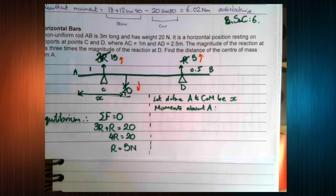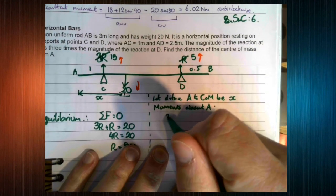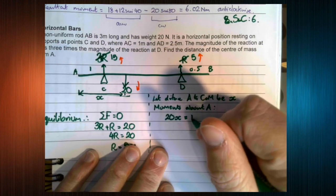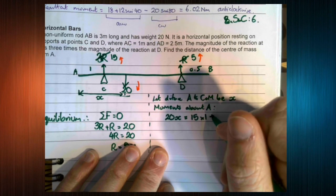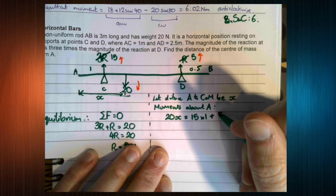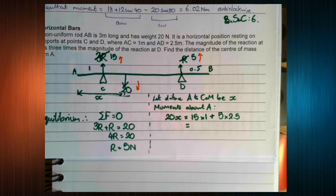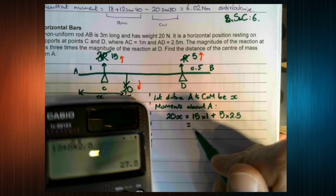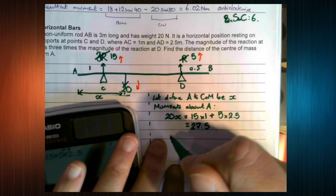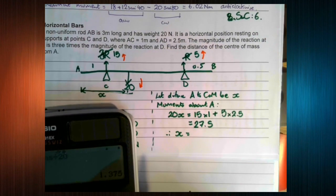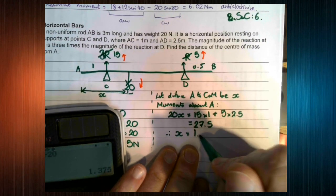We know that 20 times x is going to be equal to 15 times 1 plus 5 times 2.5. So 20x equals 27.5, so x is 1.38.